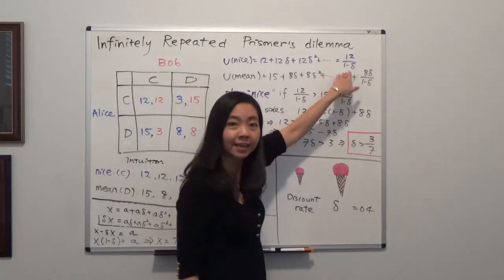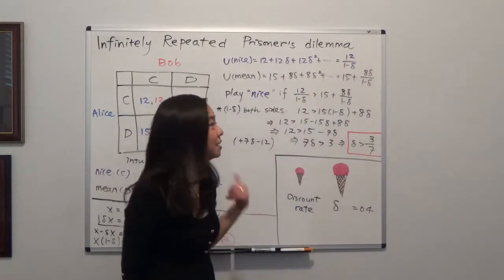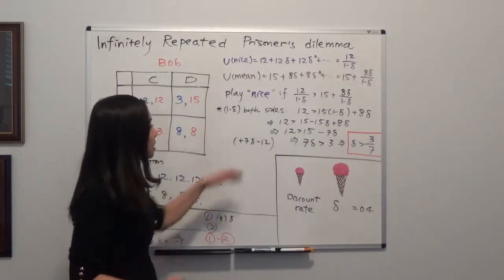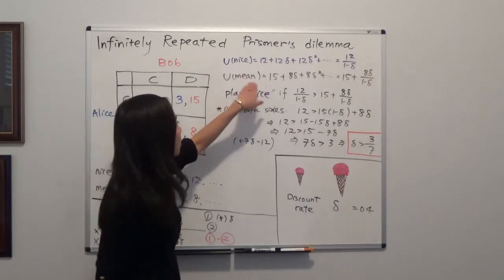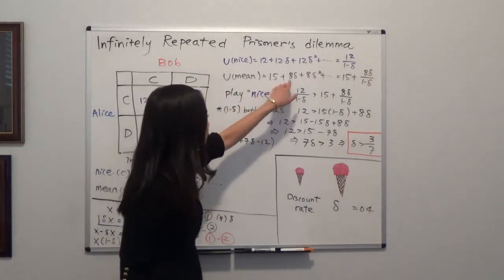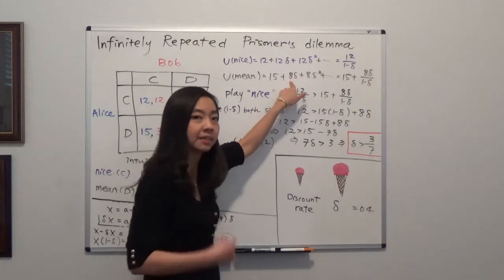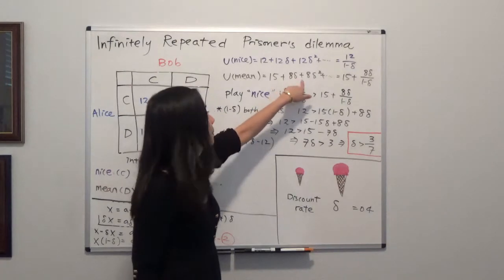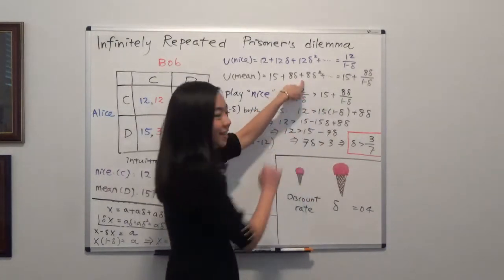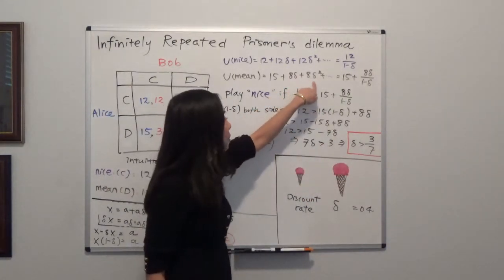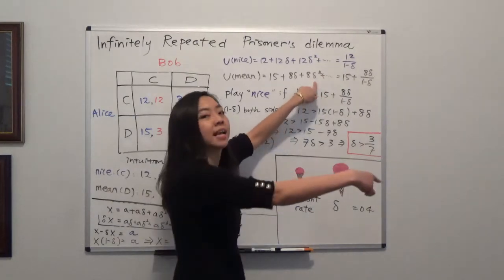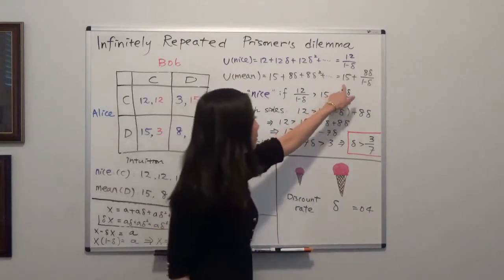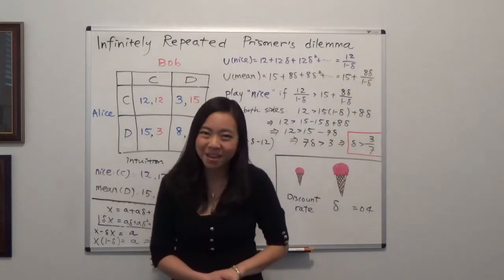If you don't understand why that sum equals 12/(1−δ), I'll explain shortly — for now please take my word for it. If Alice plays mean, she gets 15 this period, then 8 times delta next period, plus 8 times delta squared the period after, and so on. Summing that up gives 15 plus 8δ/(1−δ).